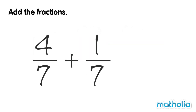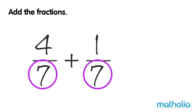Add the fractions. Let's find 4 sevenths plus 1 seventh. The denominators of these fractions are the same — they are both 7. These fractions are like fractions.